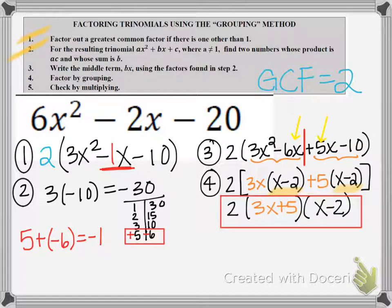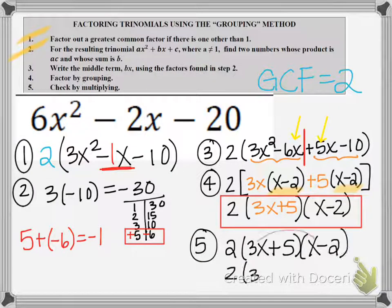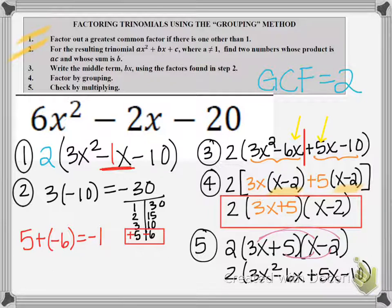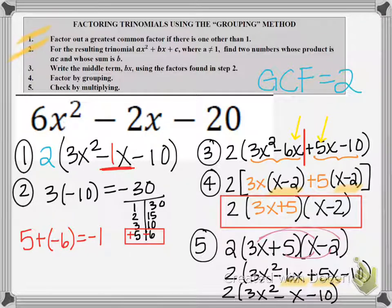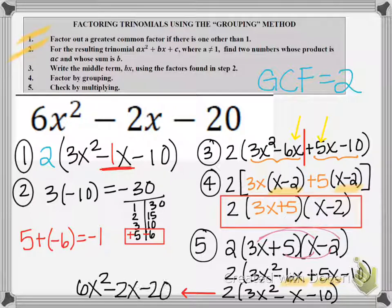So this is my answer, but of course I want to check. So here's our checking procedure. We're going to multiply the two binomials first. This gives us 3x squared minus 6x plus 5x minus 10. I'm going to combine like terms in the middle. So I have 2 on the outside and then I have 3x squared minus x minus 10. And then one more step is to distribute the GCF of 2. So I'm going to show it on the left because I'm running out of room. And I wind up with 6x squared minus 2x minus 20. That matches my original problem, so I know that I did the correct factorization.